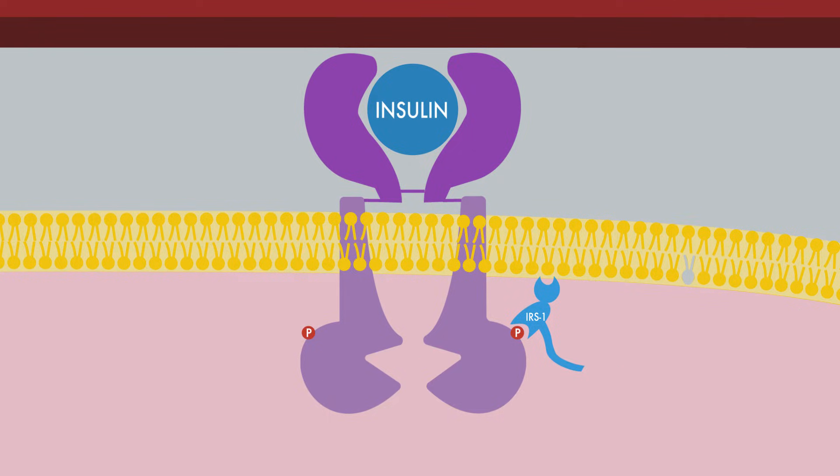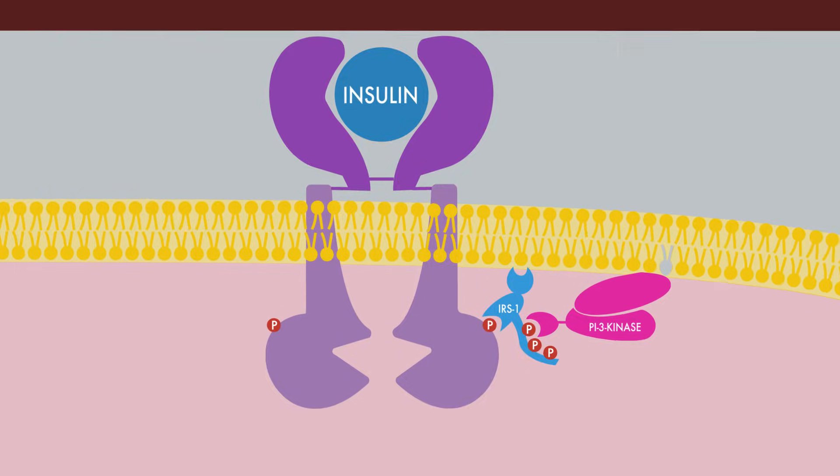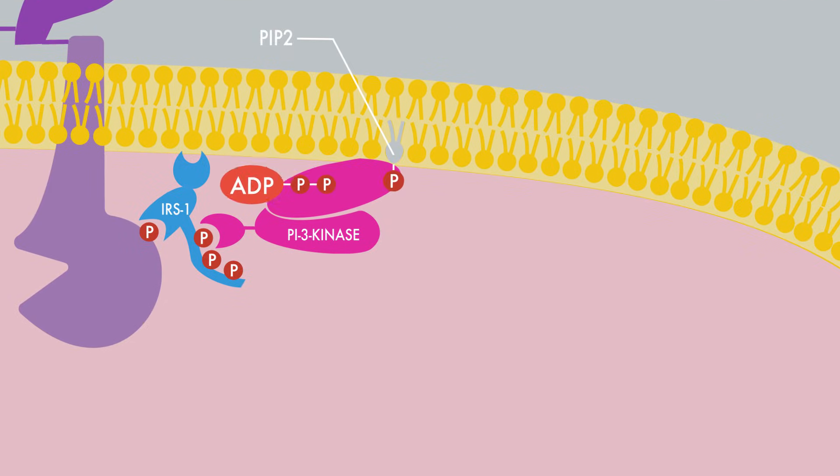IRS1 binds to the phosphorylated tyrosine residues, which then results in the phosphorylation of IRS1. The phosphorylated sites on IRS1 serve as binding sites for the PI3 kinase. PI3 kinase phosphorylates PI2, a membrane phospholipid.